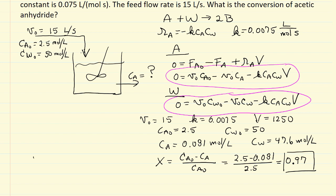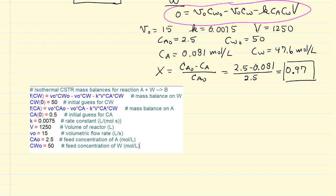Let me show you the Polymath program that got us that result. This is the Polymath program to solve non-linear algebraic equations, essentially putting everything on the right side of the equation. The program is going to get that to zero by adjusting CA and CW.